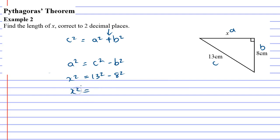All right, let's work this out. 13² minus 8², which gives me 105.